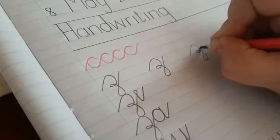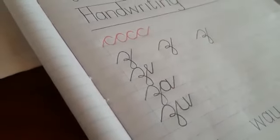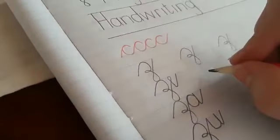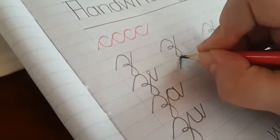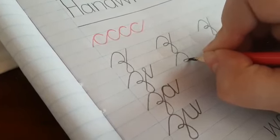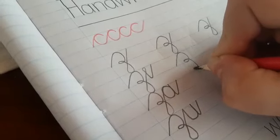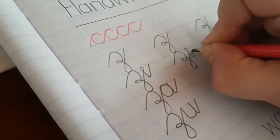Okay now we're going to join it to the e. Up round little loop down, make a loop and then into the e like that, remembering that your e has a straight back and right up.